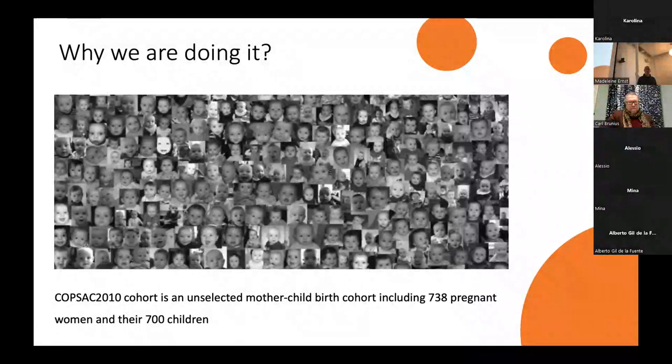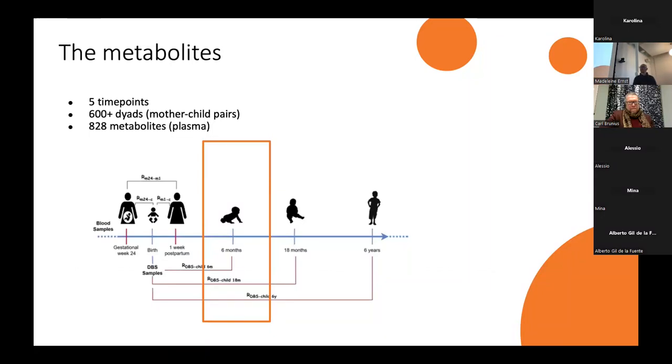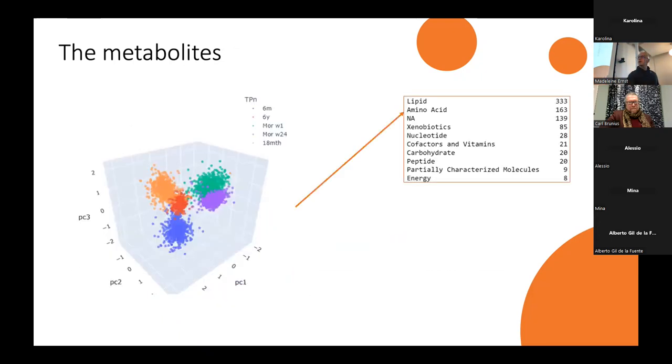COPSEC has two cohorts. One of those is the COPSEC 2010 cohort, which is an unselected mother-child birth cohort with 700 children. There were five time points when the metabolites were sampled. We have 600 mother-child pairs for the metabolome, and in total, 828 metabolites.